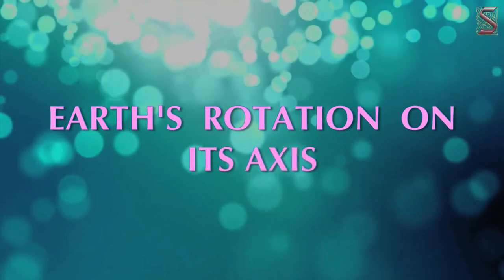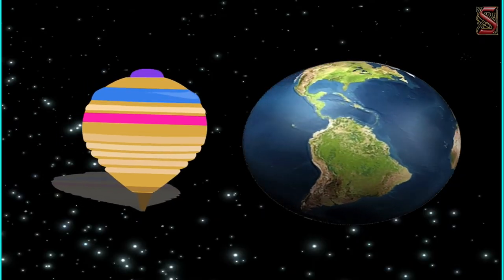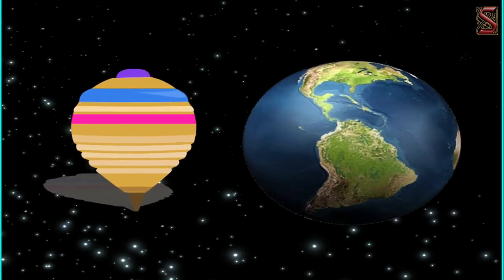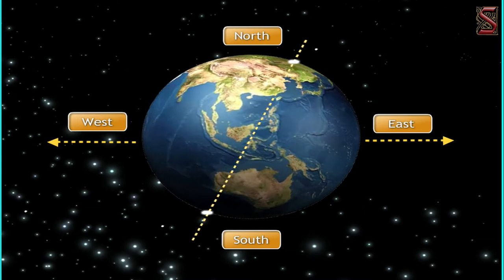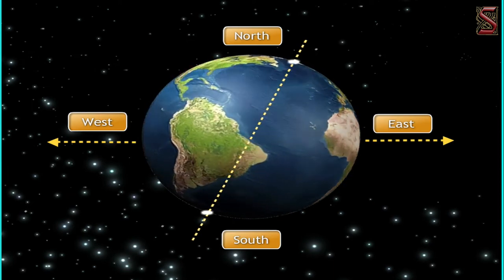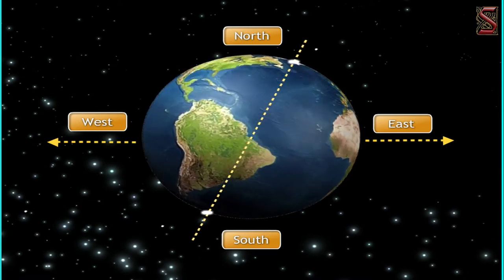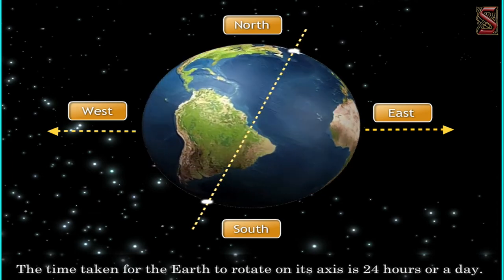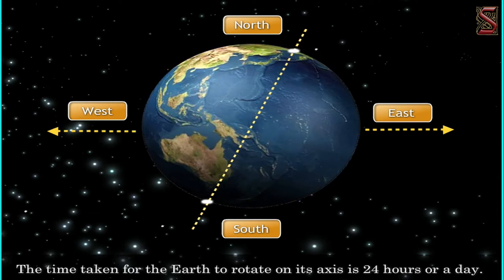Now let us have a look at how the earth's rotation influences the seasons. The earth rotates on its axis. Just like how a top spins, the earth rotates around an imaginary line that joins the north pole and the south pole — this line is the axis of the earth's rotation. The earth moves from west to east in its rotation, which results in the rising of the sun, moon, and stars in the east and their setting in the west.